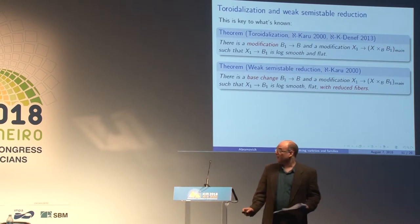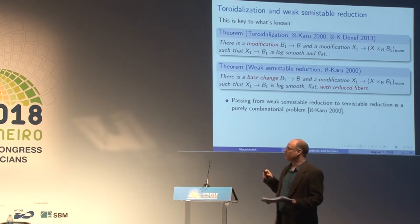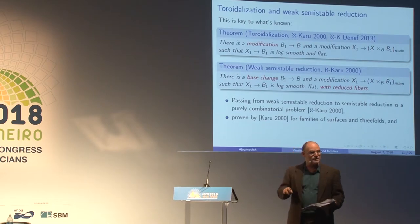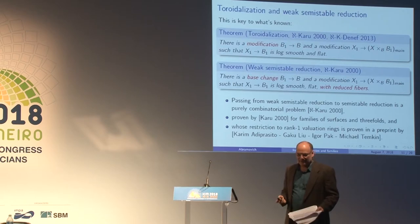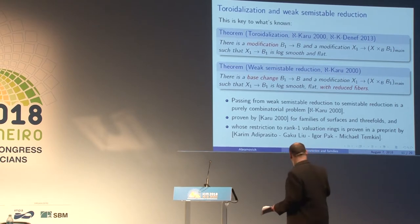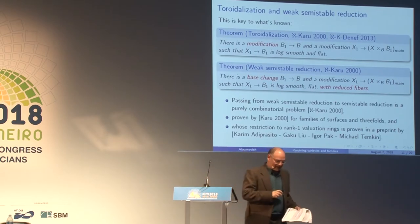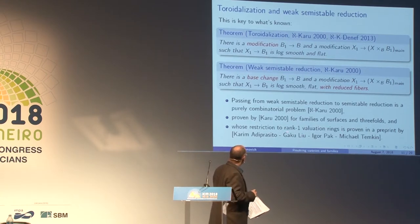This is what we call weakly semi-stable — not quite semi-stable, but I claim this is already valuable for some purposes. This is the result from 2000. Passing from weak semi-stable reduction to semi-stable reduction is a purely combinatorial problem, which we stated as a conjecture. That was proven by Karu for families of surfaces and three-folds in his thesis, and there's news from June: my collaborator Tjomkin has a combinatorialist colleague, and together with Gakul Yu and Igor Pak, they proved the semi-stable reduction in the case of rank one valuation rings.